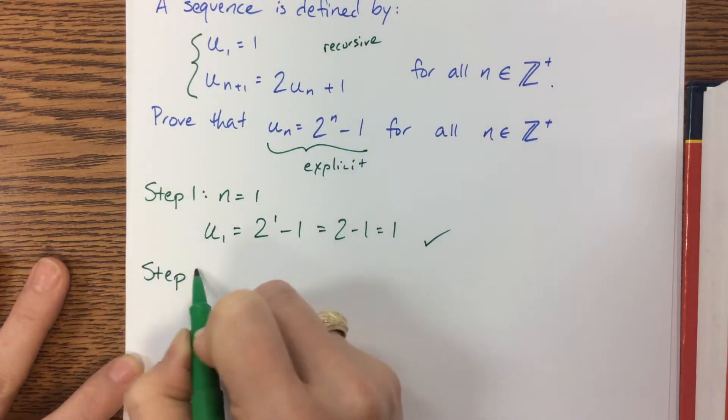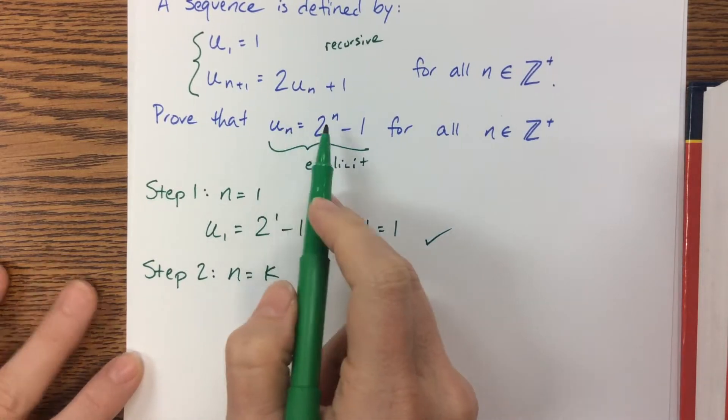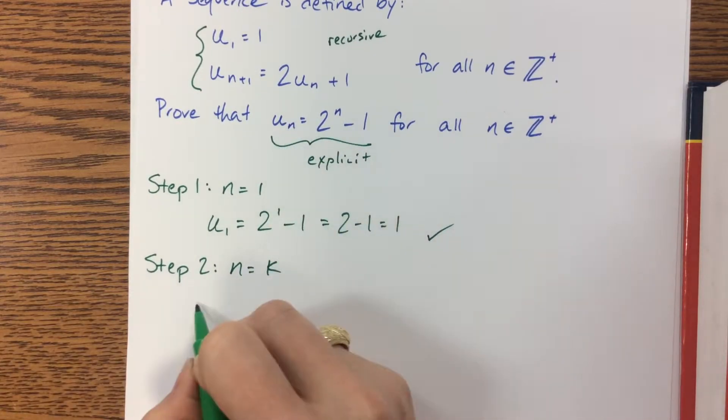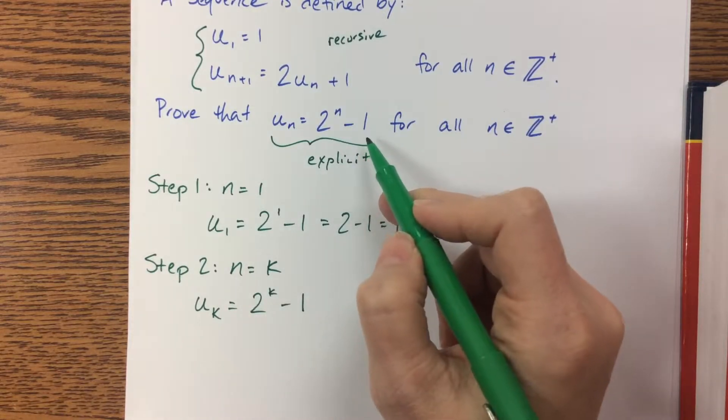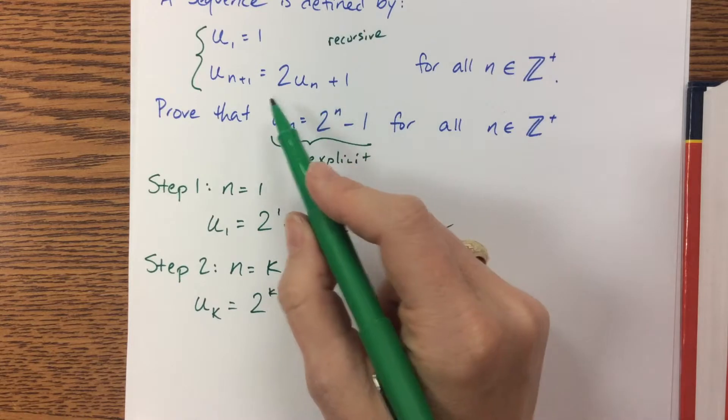Step 2, we're assuming n = k. So what we'll say here is that u_k = 2^k - 1. That came from this part right here. We're assuming this to be true.